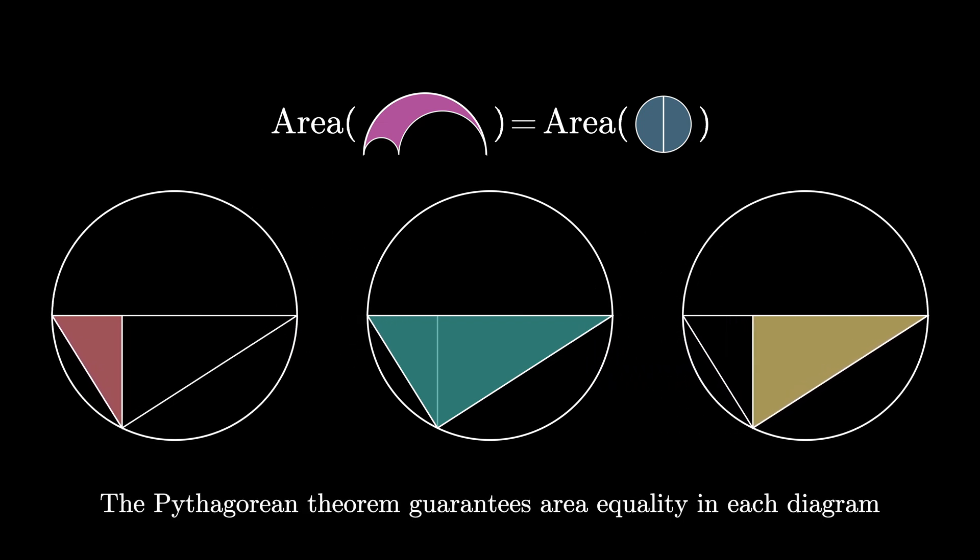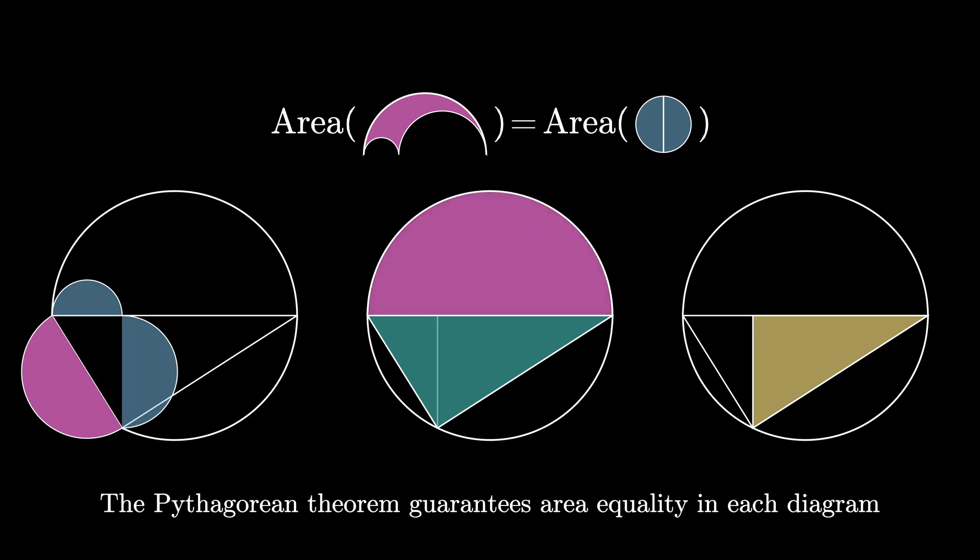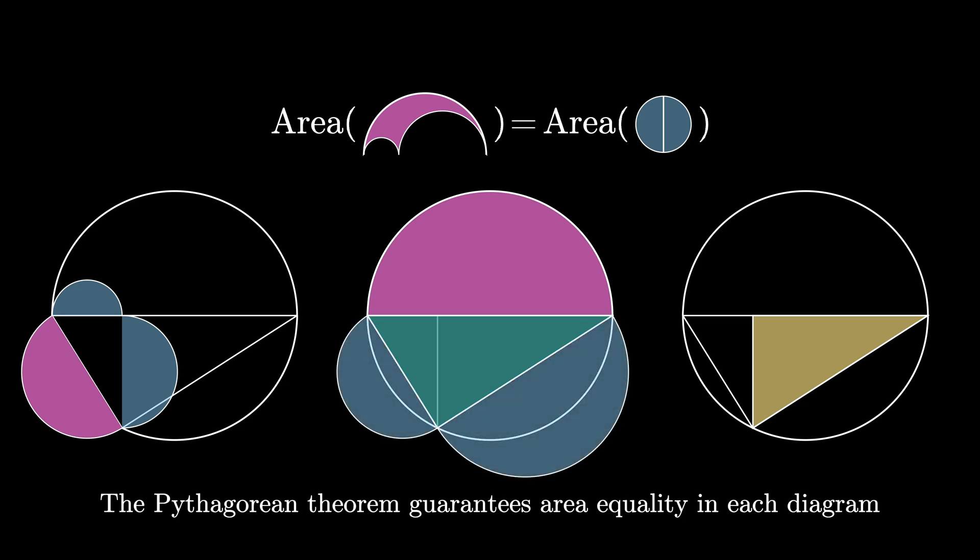For each one of these triangles we'll draw semicircles off the three sides of the triangle. According to the Pythagorean theorem the sum of the areas of the semicircles off the legs of the right triangle must be equal to the area of the semicircle off the hypotenuse.